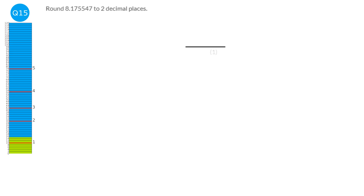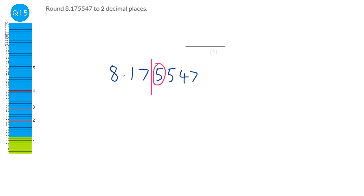It says two decimal places, so we draw a line after the second decimal place. All the numbers to the right disappear. We look at the next digit first — if it's less than five we keep the number to the left as 8.17, but if it's five or more then the seven goes up to an eight. So this will be 8.18.